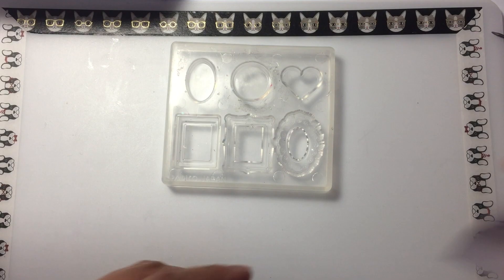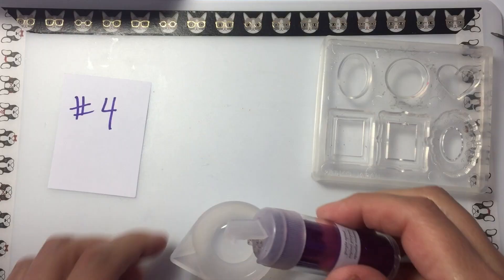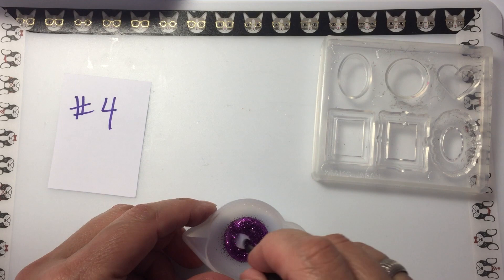The fourth method that I'm using is ultra fine glitter. Glitter works really well as a standalone. You don't have to add pigment to it. I love glitter as a method to color resin.